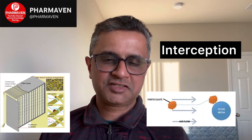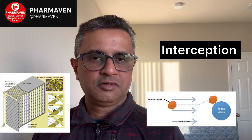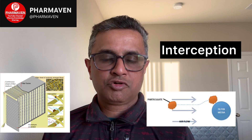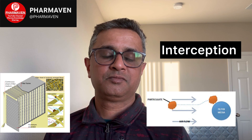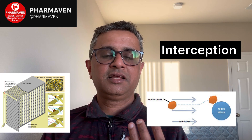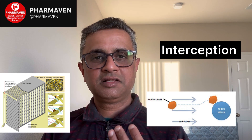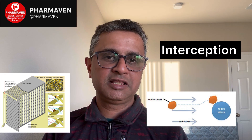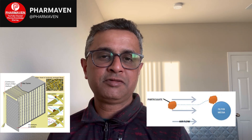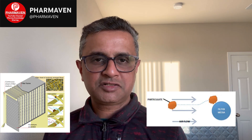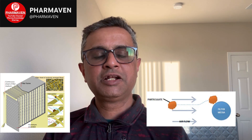The third mechanism is interception. Particles smaller than 0.3 micron are so small that they don't have significant mass. When they travel through the HEPA filter structure and come into contact with the fiber structure, they get attached to it. They don't have enough mass or weight to be carried away by the air velocity.